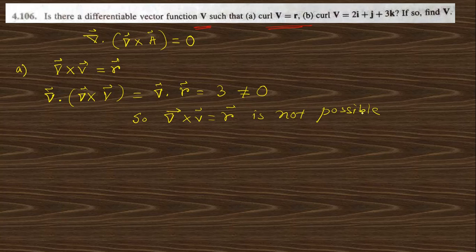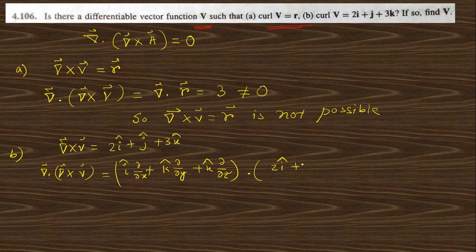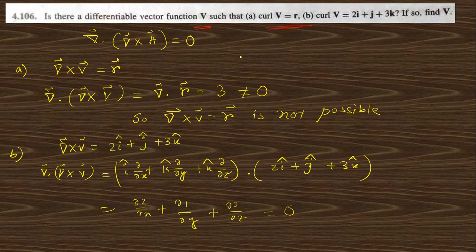In case of part B, curl of V equals 2i-cap plus j-cap plus 3k-cap. If we find the divergence of curl of V, that is divergence of (2i + j + 3k), we get del/dx of 2 plus del/dy of 1 plus del/dz of 3. Since these are constants, we get 0. Since this property holds, curl of V equal to this constant vector is possible.